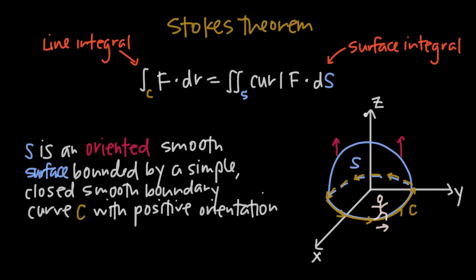Notice that we have the surface s and the boundary curve c. In order to use Stokes' Theorem, the boundary curve has to have a positive orientation, which relates to the orientation of the surface. If the surface is oriented up, we're looking at the surface from above. What we want to see is a counterclockwise direction for curve c. If we're up here looking down and the surface is oriented up, then c needs a counterclockwise direction — that's what we call a positive orientation.